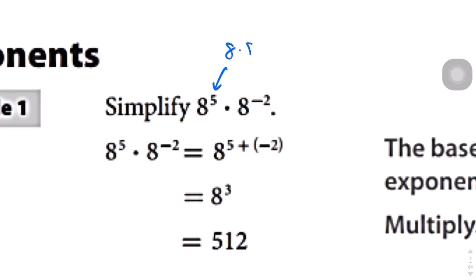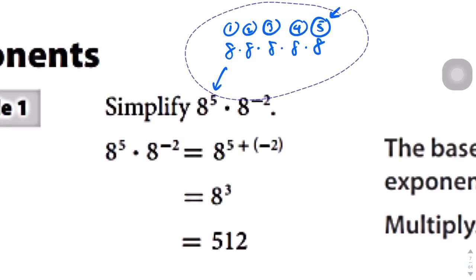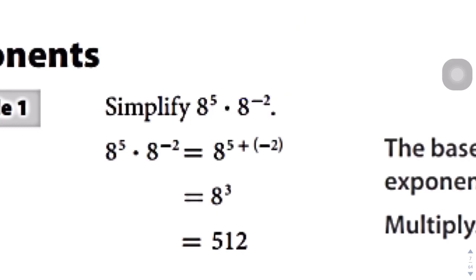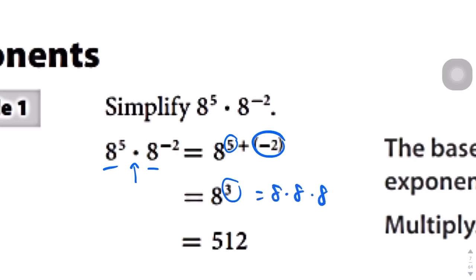Specifically, 8 to the power of 5 means 8 times 8 times 8 times 8 times 8 — you're multiplying 8 by itself 5 times. But here's a shortcut: when you have the same base, as these two terms do — 8 to the power of 5 and 8 to the power of negative 2 — and you're multiplying them, you can actually just add the exponents. So 5 plus negative 2 gives you 3. 8 to the power of 3 is 8 times 8 times 8, and if you punch that on the calculator, you get 512.